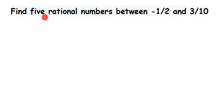How do we solve this type of question? Whenever they give you this, you have to check the denominators of the two rational numbers. Here, one denominator is 2 and the other is 10, so they are not the same. If they are the same, you can proceed to the second step; if not, we have to make them the same.